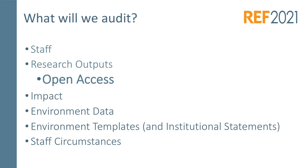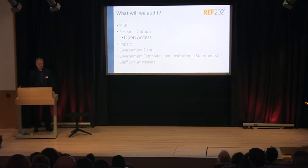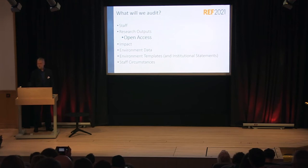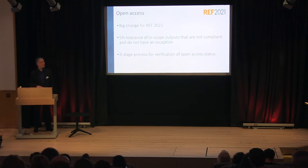We'll audit staff - checking staff eligibility and making sure staff are being appropriately included. We will look at research outputs, and part of the verification and audit of research outputs obviously includes open access. We're also going to be looking at impacts. We will be conducting verification of environment data, and there will also be some verification of information provided in the environment templates and the institution-level statements. We also conduct some verification on staff circumstances. But I'll concentrate for the rest of the session on open access, because that's what we're here to look at today.